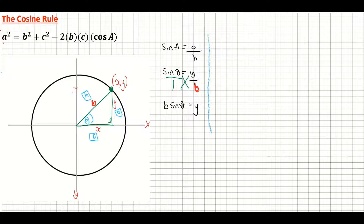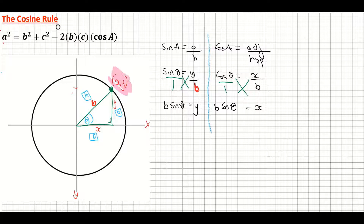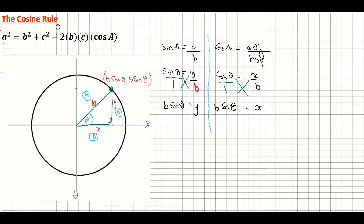Now doing the same for the cosine ratio: cos theta equals adjacent over hypotenuse, which is x over B. Cross multiplication gives us x equals B times cos theta. So the coordinate at the edge of the circle, which we called (x, y), is now relabeled as (B cos theta, B sine theta).